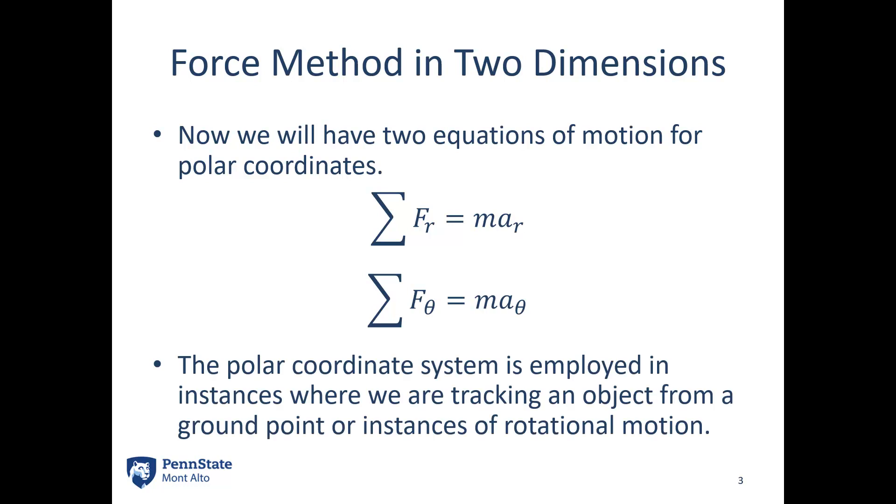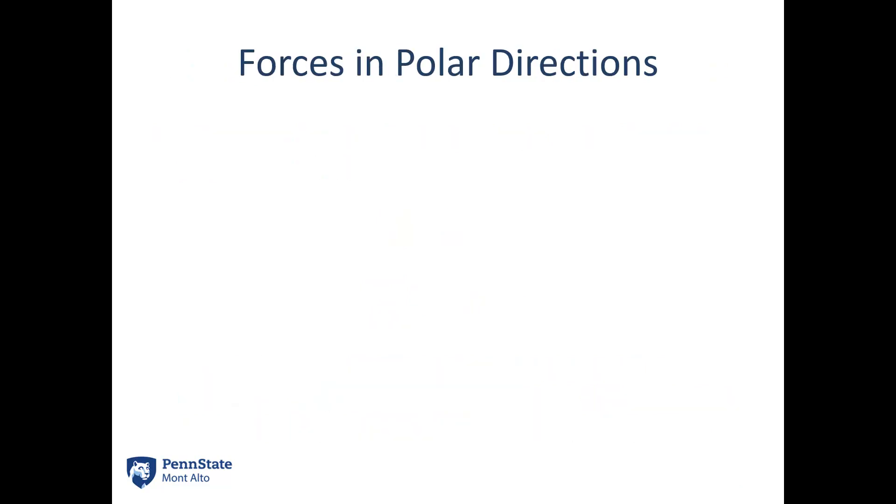The polar coordinate system is employed in instances where we're tracking an object from some ground point, or in instances where we have rotational motion. It's going to be particularly important when we deal with rigid body kinetics later on.